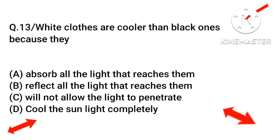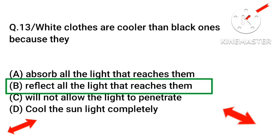Next question: white clothes are cooler than black ones because they do what? Options are option A absorb all the light that reaches them, option B reflect all the light that reaches them, option C will not allow the light to penetrate, option D cooler than sunlight completely. The right answer will be option B: reflect all the light that reaches them.